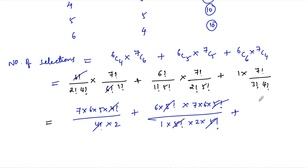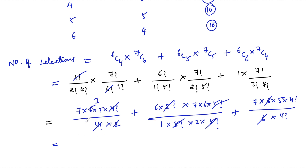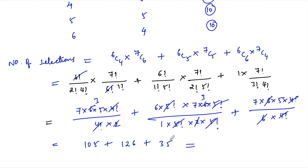After cancellation: 7! can be written as 7×6×5×4! over 4!, and 3! equals 6, so simplifying gives 7×3×5 = 105. The second term gives 7×3 = 21, and 21×6 = 126. The third term gives 7×5 = 35. So the total is 105 + 126 + 35 = 266.